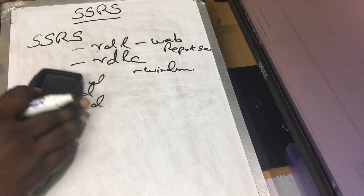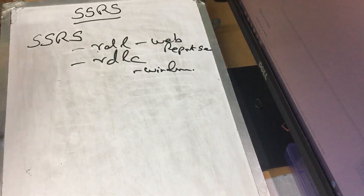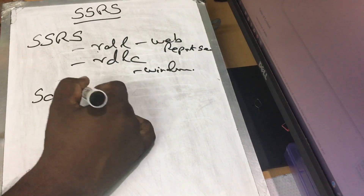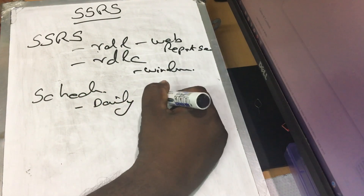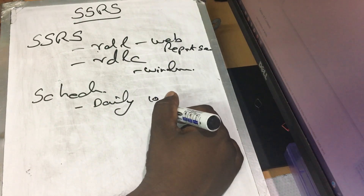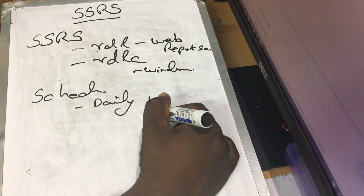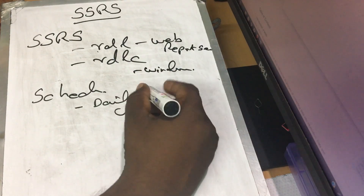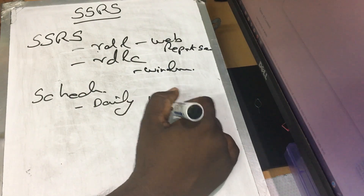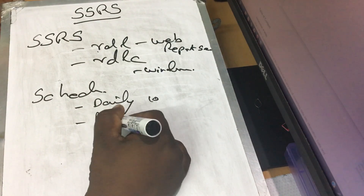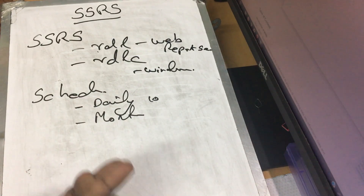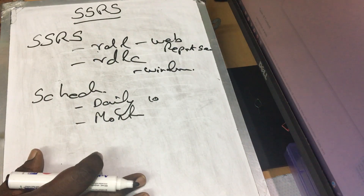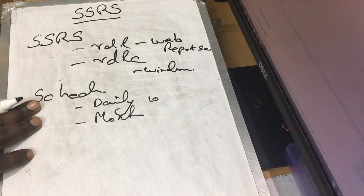If you want to use the report on the server, you upload the report to the server. You can schedule that report — you can schedule it to automatically generate in PDF format. We are going to schedule a daily report automatically.